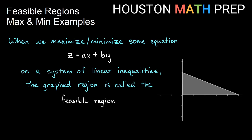Hey everyone, Houston Math Prep here. We want to talk to you in this video about finding maximum and minimum values for some equation over a feasible region. We assume you know how to graph systems of inequalities, and we're going to be referring back to systems that we graphed and solved already. The feasible region is the graphed region that contains all solutions for the system of inequalities, not yet taking the optimization equation into account.